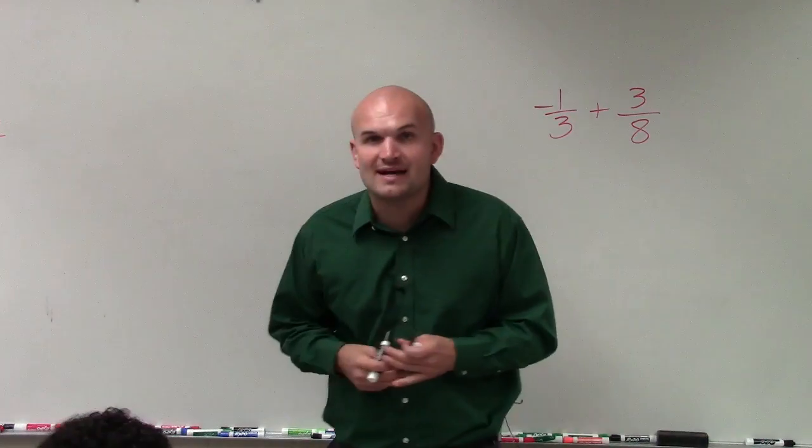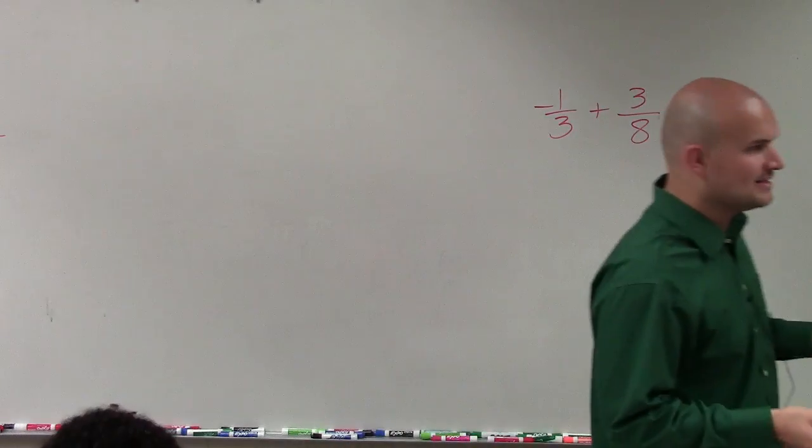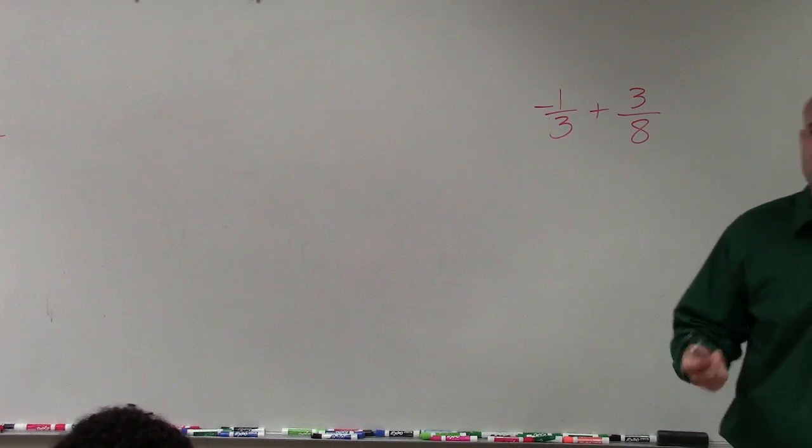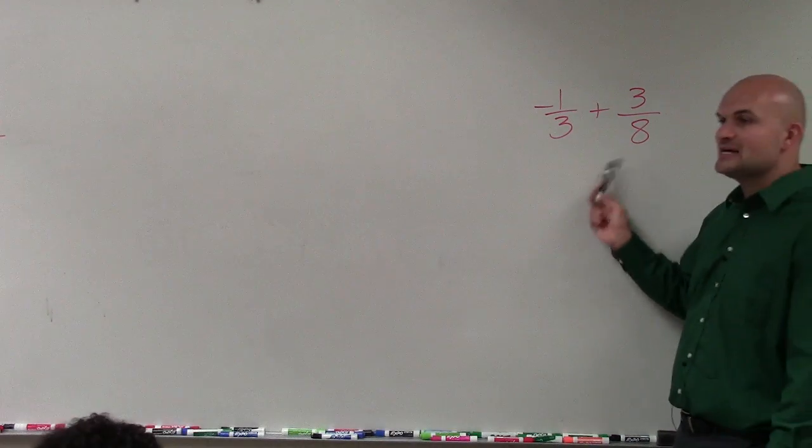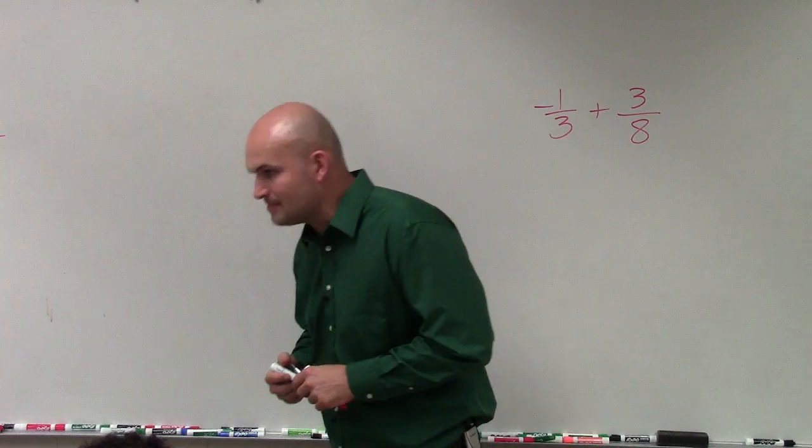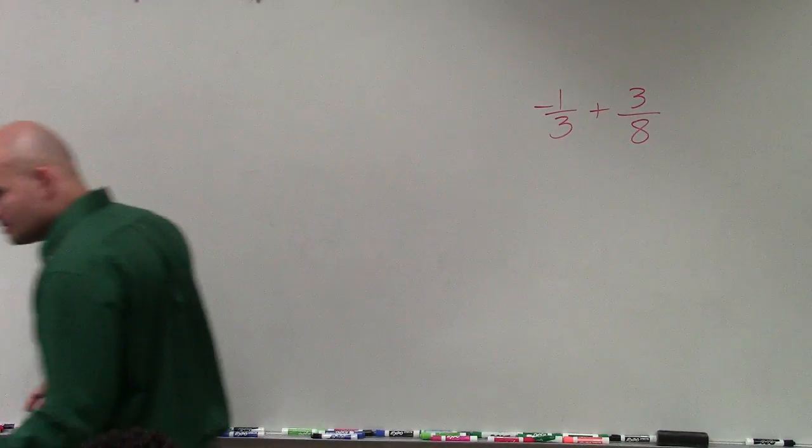The easiest way to find a common denominator is to multiply the denominators. That's the easiest way to find one. Just multiply 3 times 8, which is 24. That's going to give you your common denominator. Does that make sense? Yeah.